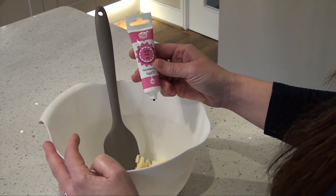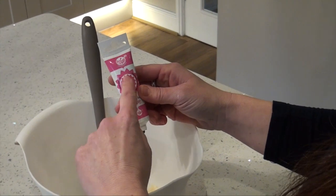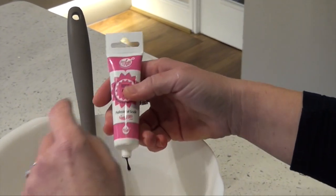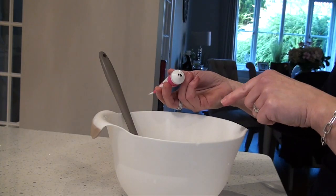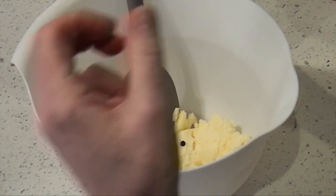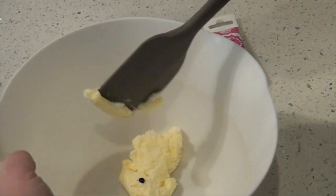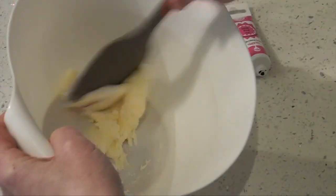This is pro gel pink. The pro gels are my favorite type of coloring. You can use the tiniest amount or a lot to make a really deep pink. So if you want like a light pink, you add the tiniest amount, like there.